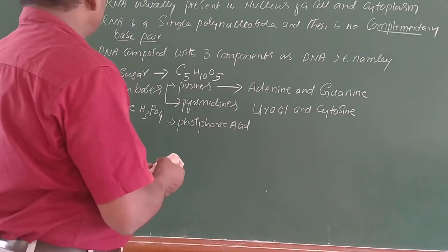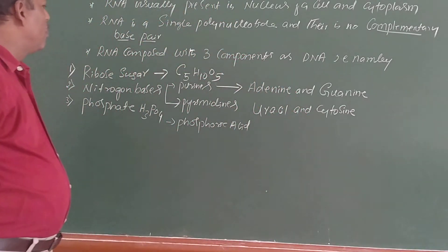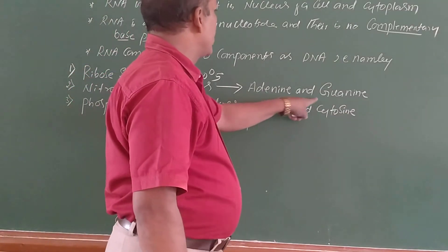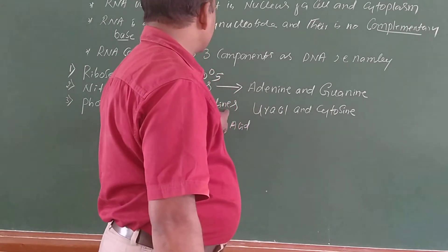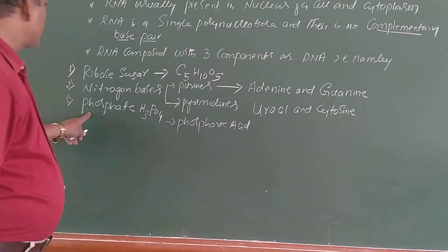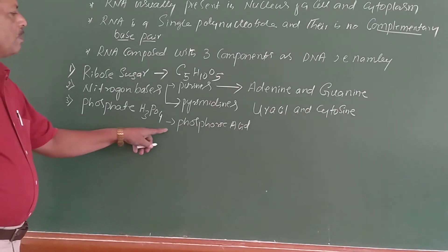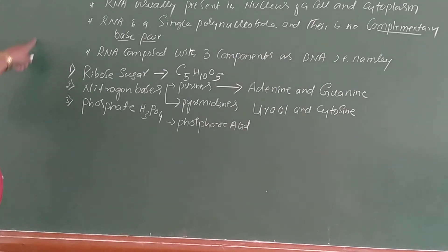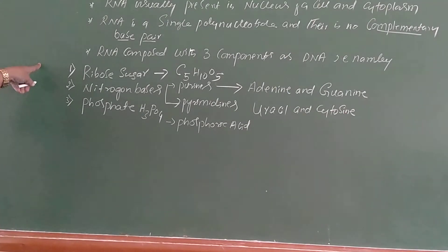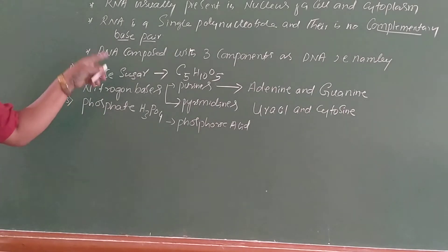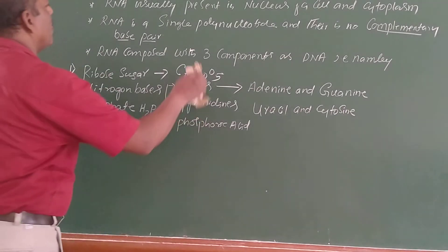To summarize the components: ribosugar is C5H10O5; nitrogen bases are purines — adenine and guanine — and pyrimidines — uracil and cytosine; phosphate is H3PO4, phosphoric acid. Due to the presence of this phosphate, the RNA molecule is considered acidic, and hence it is called a nucleic acid.